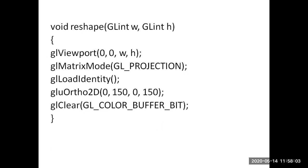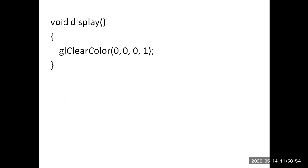In the reshape function, gl_viewport maps the clipped object from the clip plane to the viewport, defined with x_min, y_min, x_max, y_max using the width and height of the window. gl_matrix_mode sets the mode to projection mode. gl_load_identity loads the identity matrix and sets the projection matrix type. glu_ortho_2D takes four parameter values: x_min, y_min, x_max, y_max of the clip plane. gl_clear clears the buffer. In the display function, gl_clear_color sets the background color for the window.